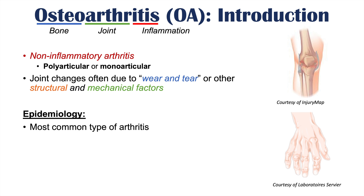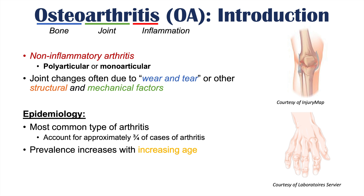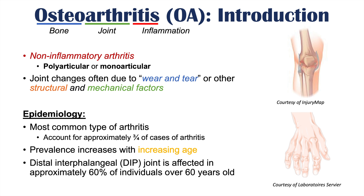Osteoarthritis is actually the most common type of arthritis, accounting for approximately three quarters of all arthritis cases. The prevalence increases with age, so as a patient gets older, they're more likely to have joints affected by this condition. For example, the distal interphalangeal joint — the DIP joint, which is the last knuckle joint of a finger — is affected in approximately 60% of individuals over 60 years of age.